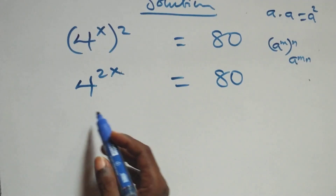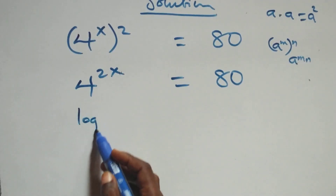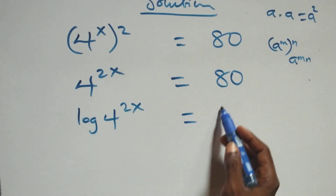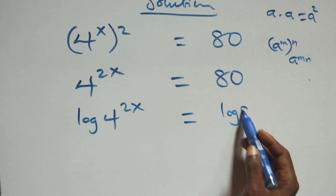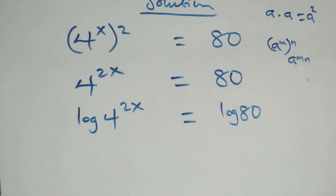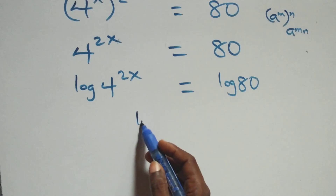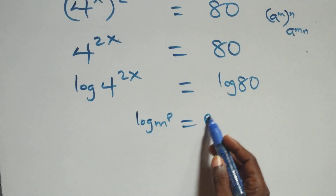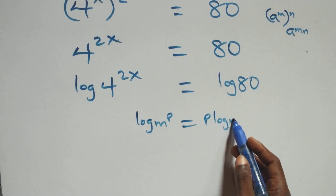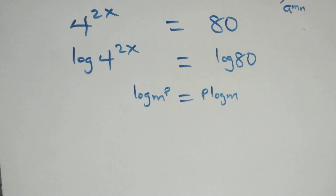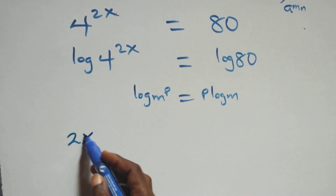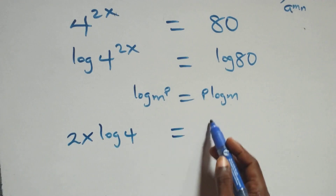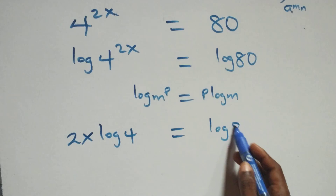The next step: we take the log on both sides. That is, we have log of 4 raised to power 2x equals log 80. Then we apply the power log rule: log of n raised to power p is the same thing as p times log n. So here we have 2x log 4 equals log 80.